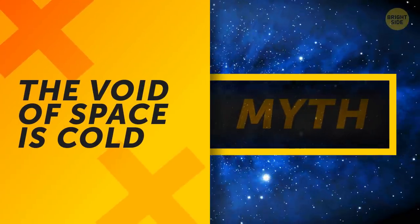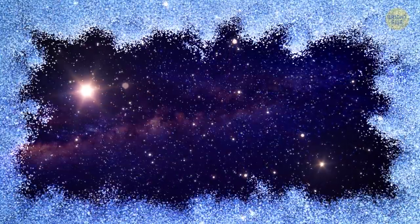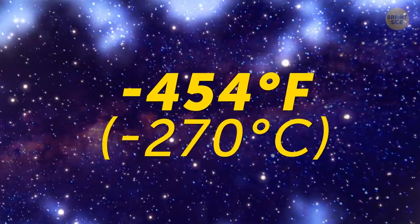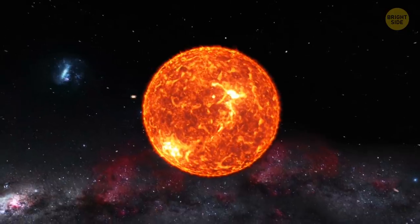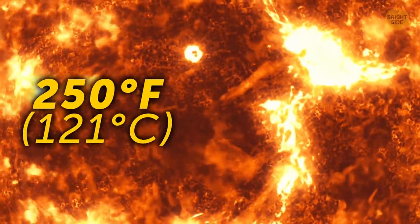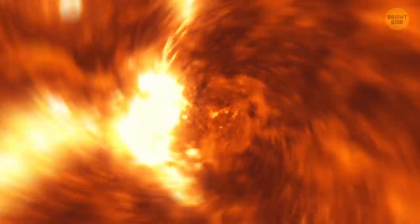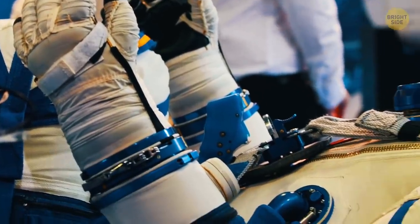The void of space is cold. Space isn't just cold. It's extremely cold. Minus 454 degrees Fahrenheit. Nothing a sweater can save you from. But relatively close to the Sun, it gets up to 250 degrees. This is also why spacesuits are white. They need to reflect as much light and heat as possible.